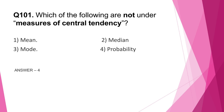Question number 101: which of the following are not under measures of central tendency — mean, median, mode, probability? The correct answer is option 4, probability. Probability indicates the chance of happening of an event; it is not a measure of central tendency. Also note the measures of location like average, percentile, and measures of variability like range, mean deviation, standard deviation, etc.